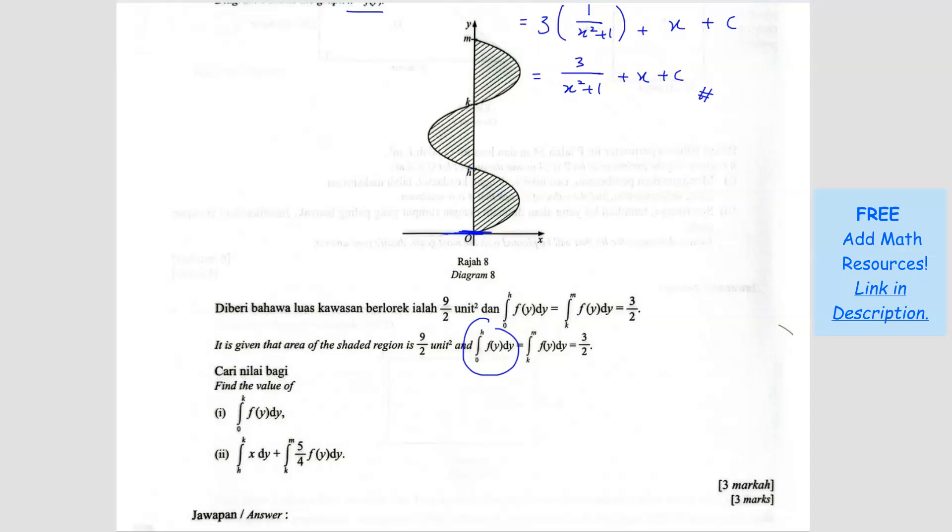So that means we know that this one is 3 over 2, the area. This is also 3 over 2. And since they said the shaded region is 9 over 2, if you want to do proper calculation you can write. But if you don't want to do proper calculation, you can just calculate by yourself. 9 over 2 minus 3 over 2 minus 3 over 2, you get 3 over 2 again. So this is also 3 over 2.